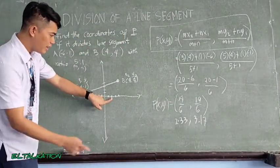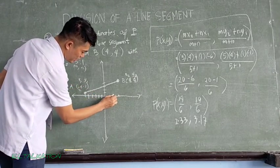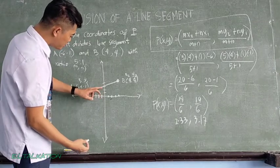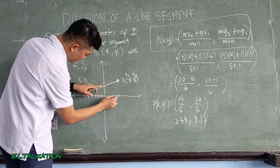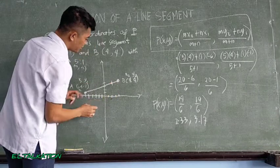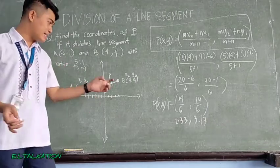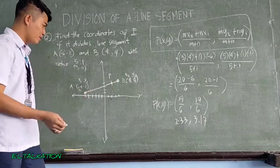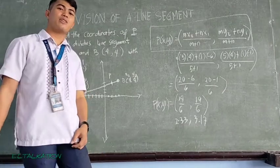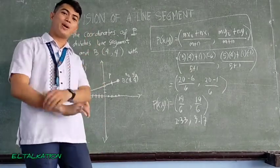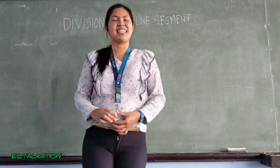So if that is 2.33, so 1, 2, and 0.33 so 1, 2, and then put it near 2. Then 3.17, so 1, 2, 3, and a little bit more. And this will be the point P where it divides A and B. So yeah, that's all for internal division. If you have a question, just comment below and we'll try to answer that question.